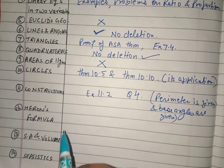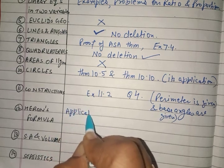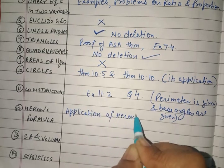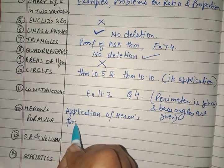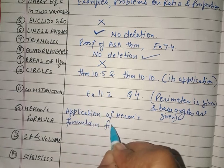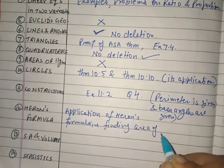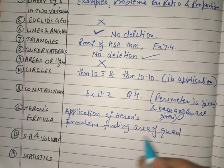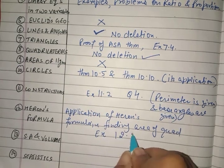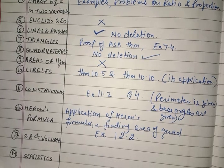In Heron's Formula, the application of Heron's formula in finding the area of a quadrilateral is removed. Exercise 12.2 is removed completely.